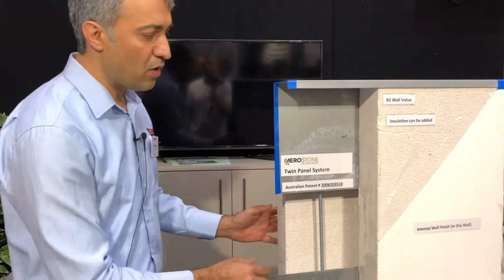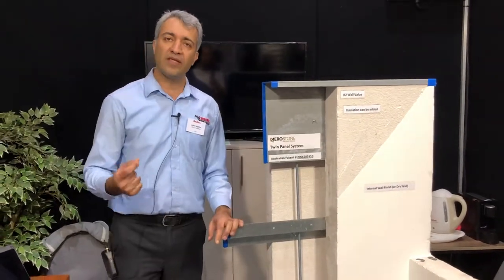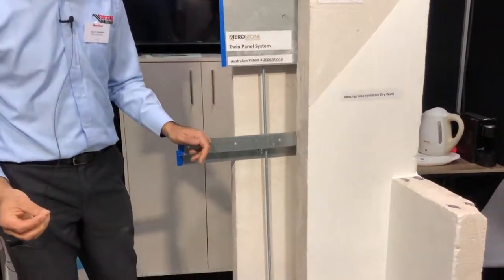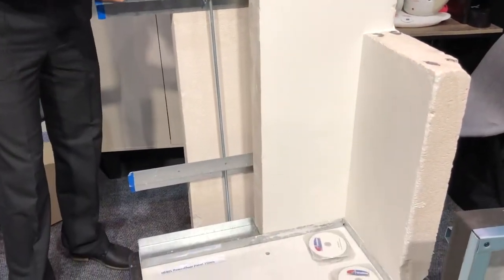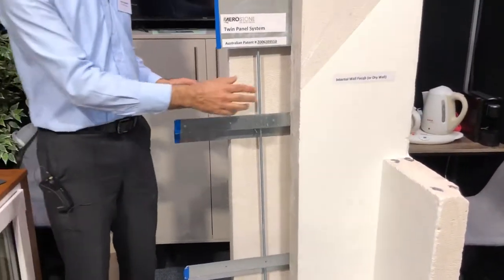The R-value on this system is R2. The R-value on a normal masonry system with double brick is 0.68. By adding the insulation to the cavity on this system, you can increase this R-value up to R2.